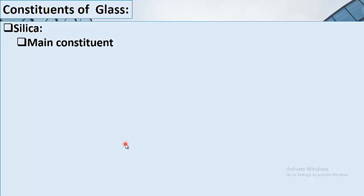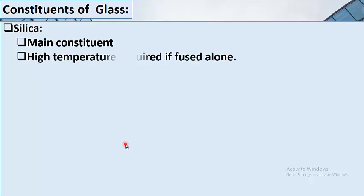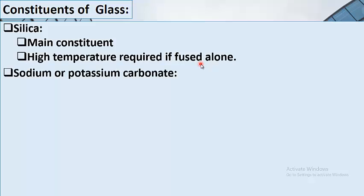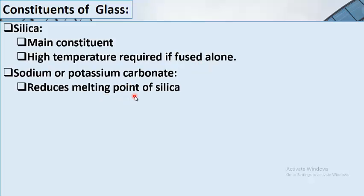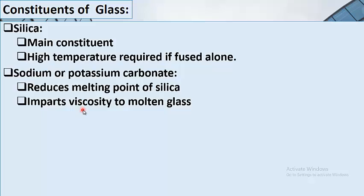The first constituent is silica — silica is the main constituent of glass. High temperature is required if fused alone. Sodium or potassium carbonate reduces the melting point of silica. Sodium or potassium also imparts viscosity to the molten glass.